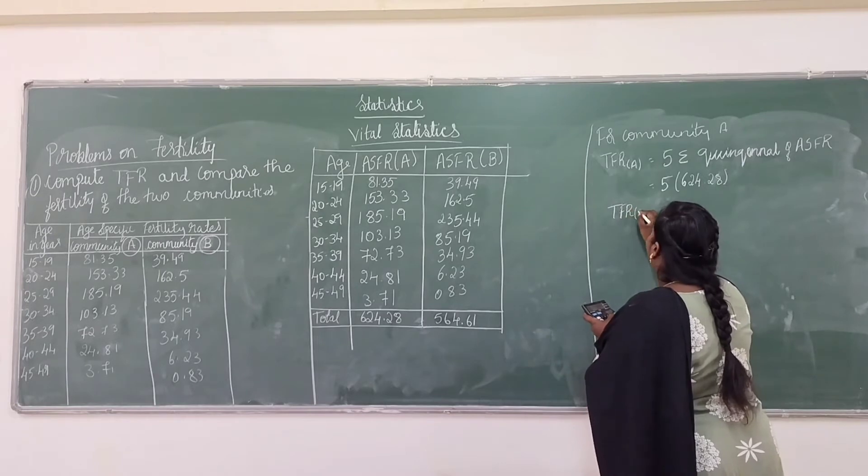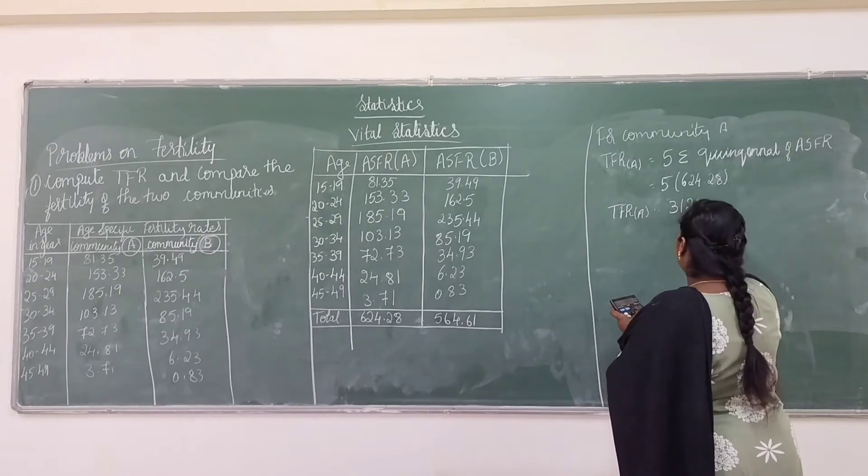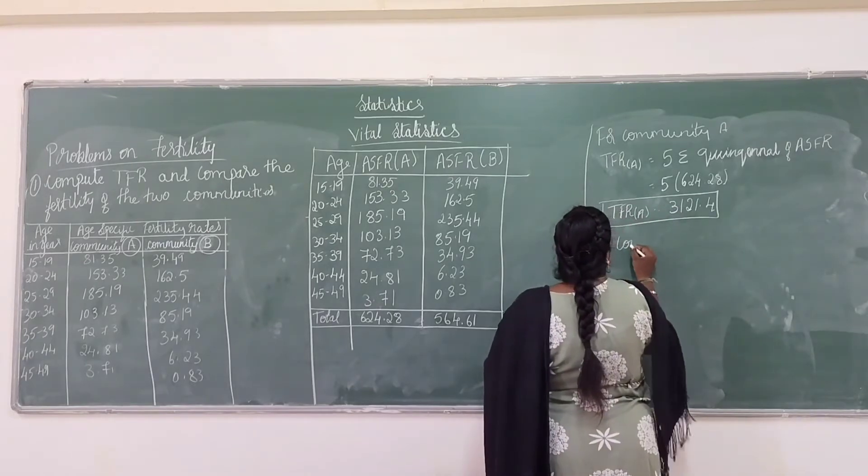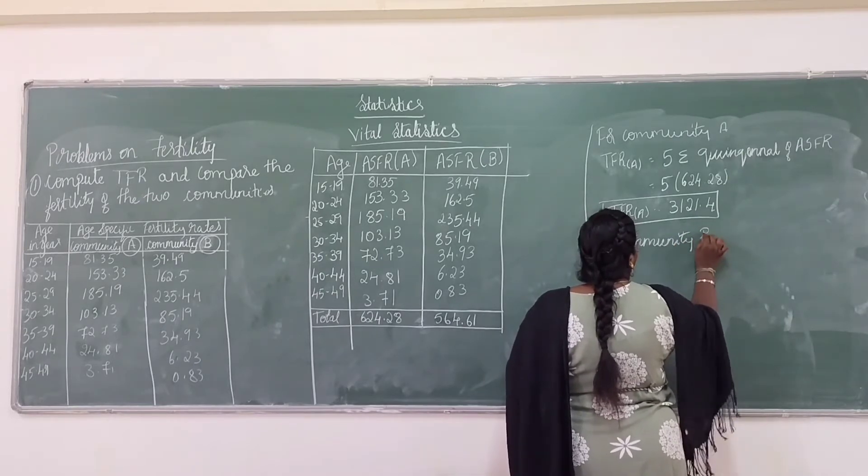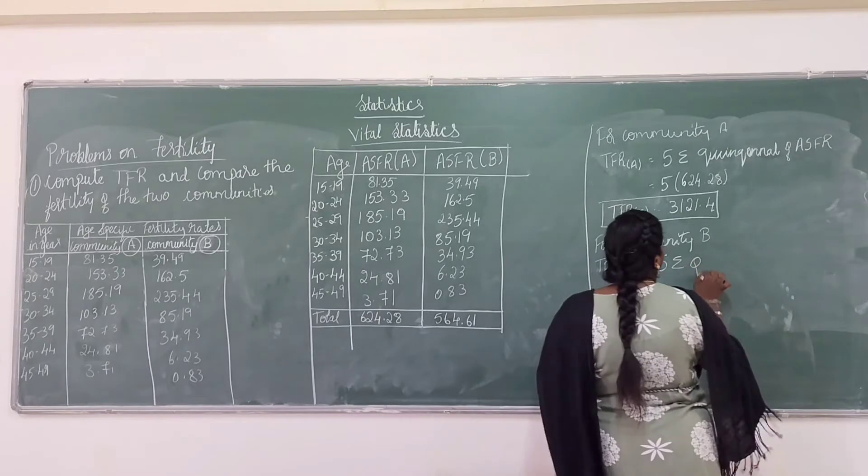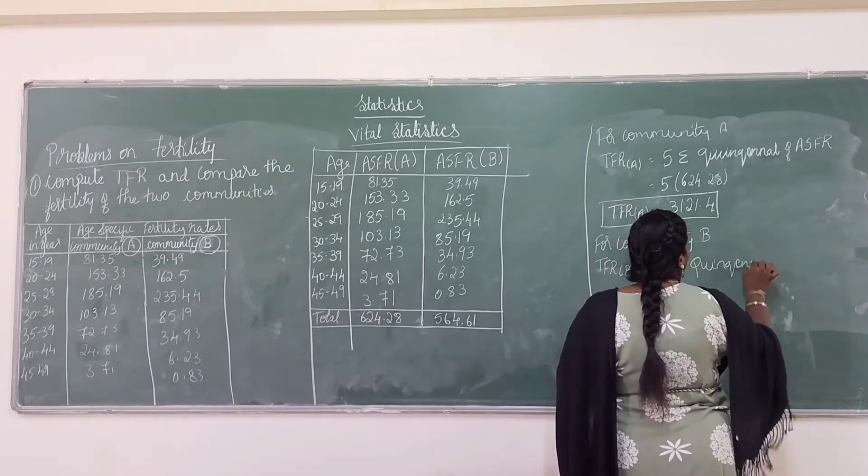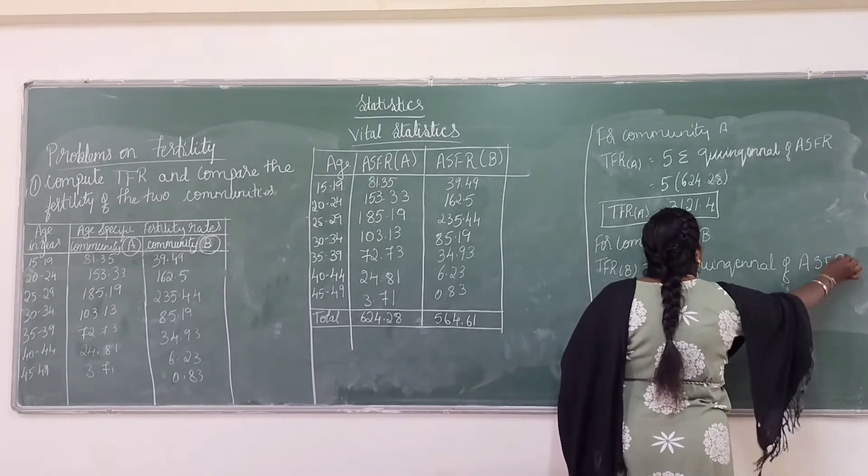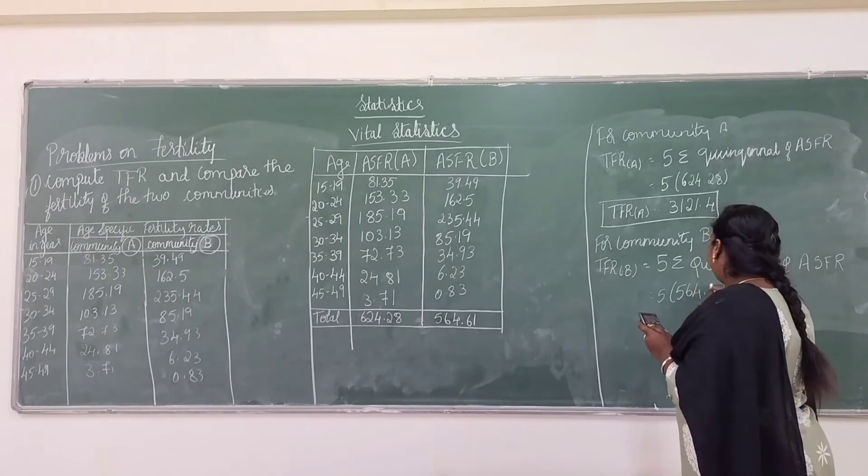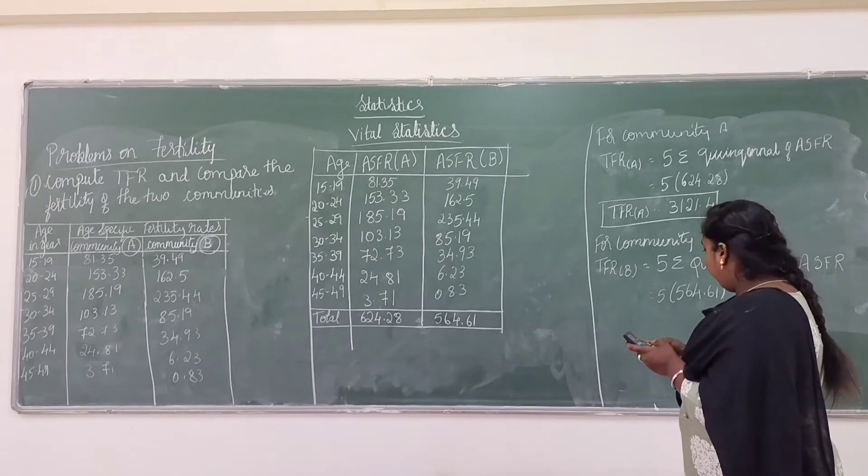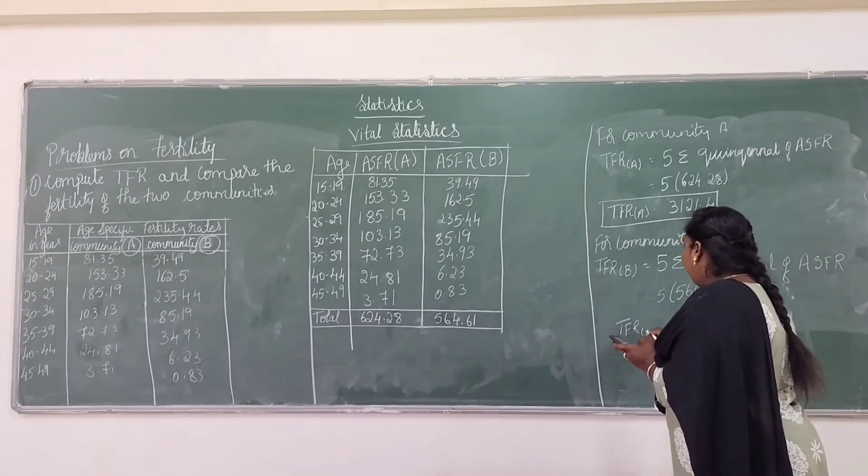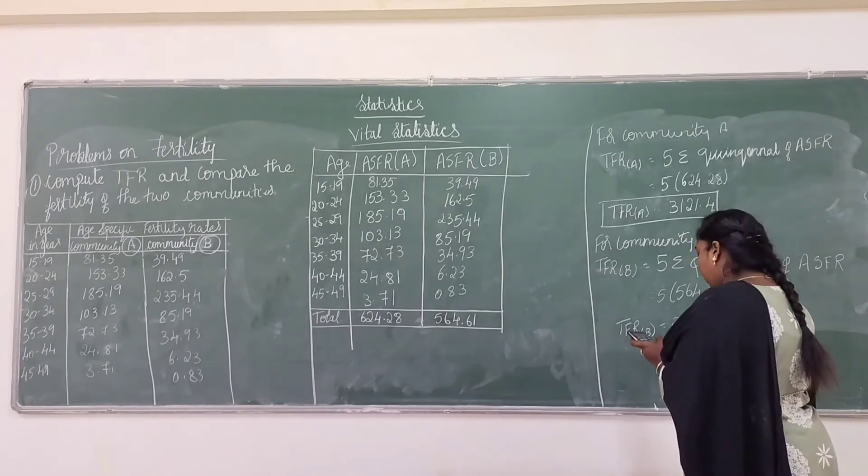Next, for community B, TFR of B is 5 into sigma of ASFR. For community B, total ASFR is 5 into 564.61. That is 5 into 564.61. I will get TFR of B is 2823.05.